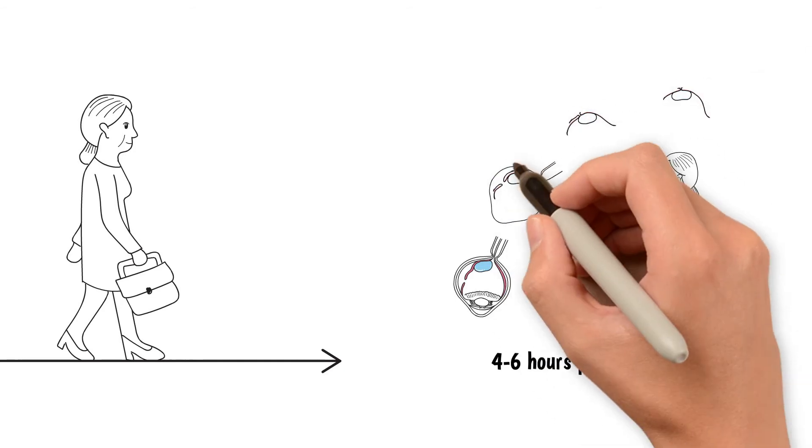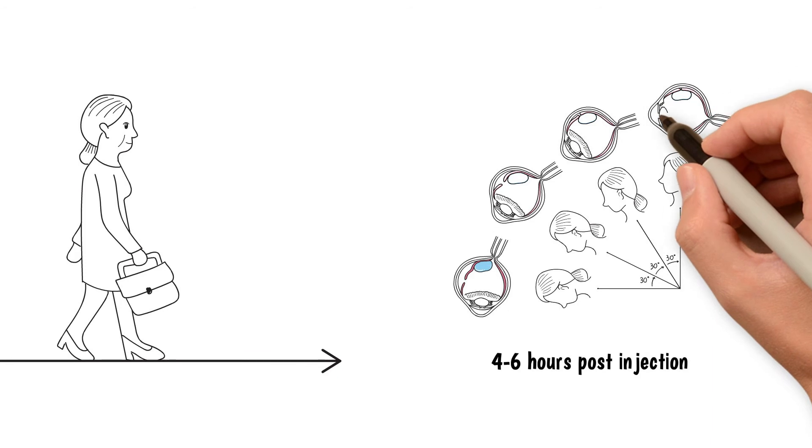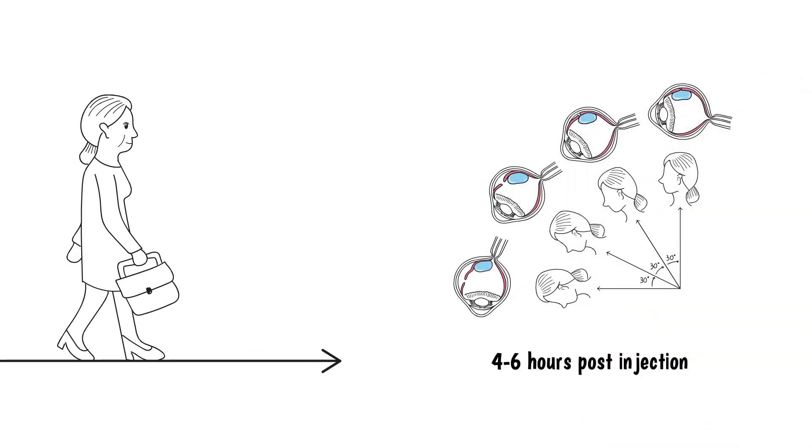After the face-down position has been held for 4-6 hours, you will gradually lift your head in increments. First, the head is lifted one-third of the way up. This position is maintained for one hour. Next, the head is lifted another one-third of the way up, for an additional hour. Finally, the head is lifted to the upright position.